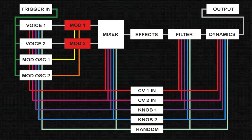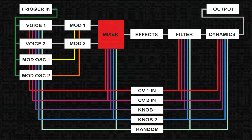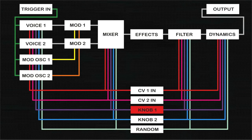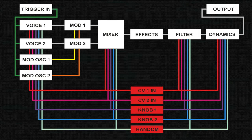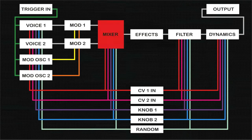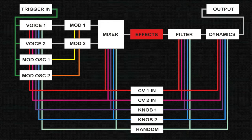The output of each mod function then feeds a voltage-controlled mixer. The balance between voices can be stationary or modulated by external CV 1 or 2, knob 1 or 2, randomized, or multiple combinations of these.